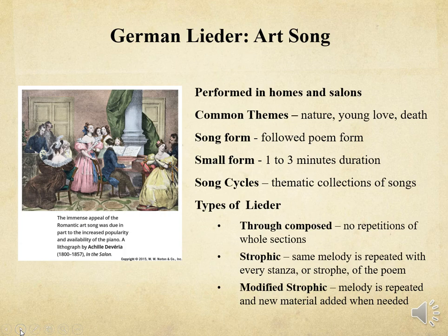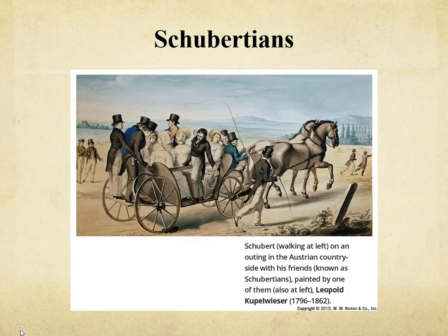These songs had common themes: nature, young love, and death. They followed a poem form, and were also small form — one to three minutes in duration. They were collected into thematic collections called Song Cycles, which would actually be like concept albums in the 20th century. Schubert's friends were artists and were very loyal to one another; they were his biggest fans and called themselves the Schubertians. This is a painting by one of his friends showing a very packed carriage on an outing.